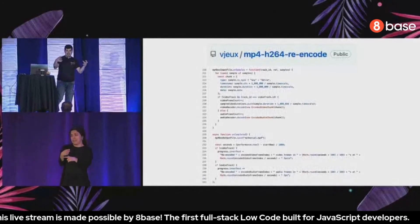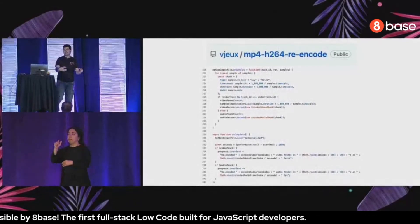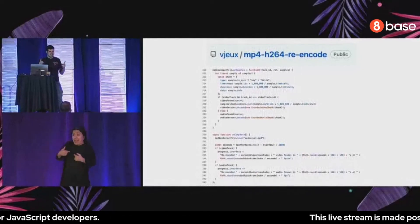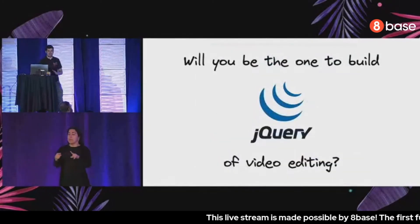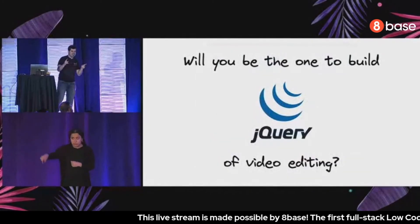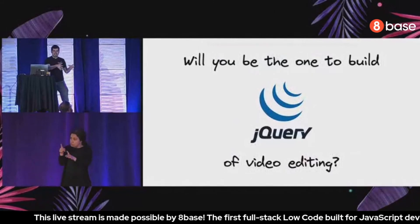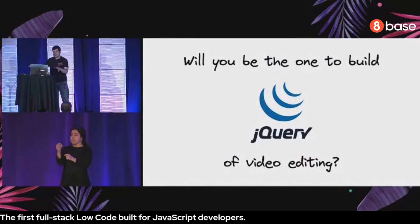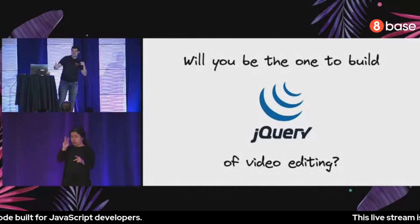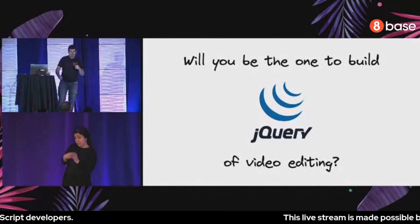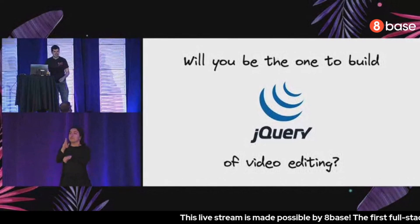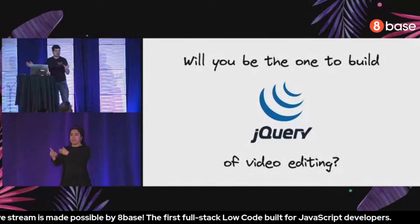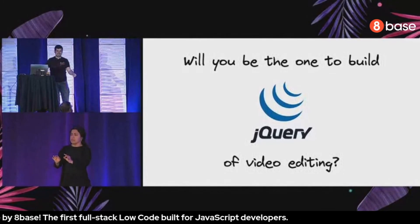I've proven that it actually works: I timed the decoding and encoding process against Final Cut Pro and it's almost the same speed. So all the browser APIs are fast and solid. Now you can build all the cool stuff on top of this. My challenge to you: take what I've done and build the jQuery of video editing — turn those 500 lines of low-level concepts into a clean API where you can just load a video, apply transform steps, and save the video, and everything just works. That's my challenge to you. Thank you.